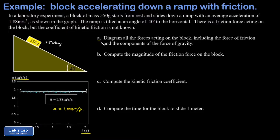Starting with part A, we're asked to diagram all the forces acting on the block including the force of friction and the components of the force of gravity. The force of gravity as always points straight down, and that has a magnitude of mg. Putting the numbers in: 0.550 times 9.8 gives me 5.39 newtons.